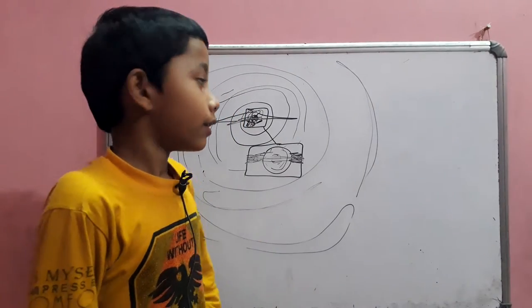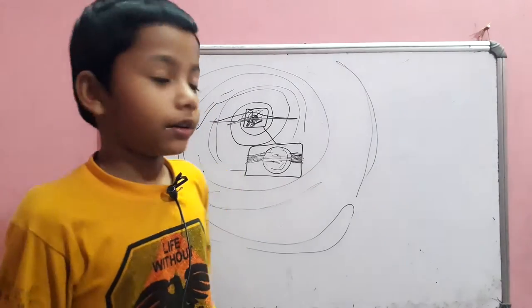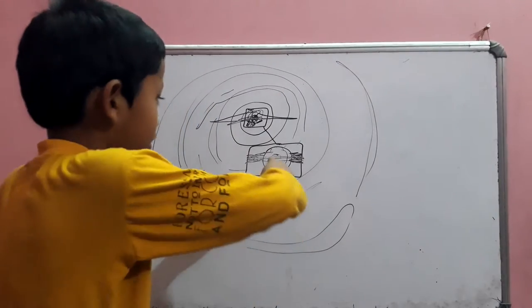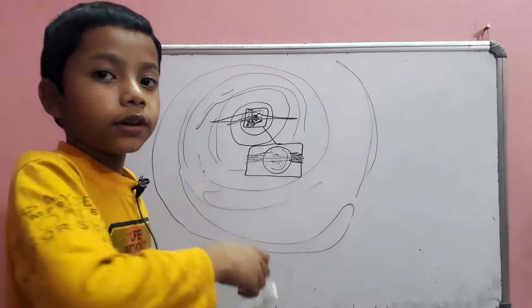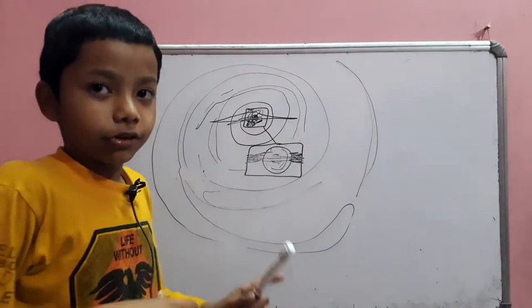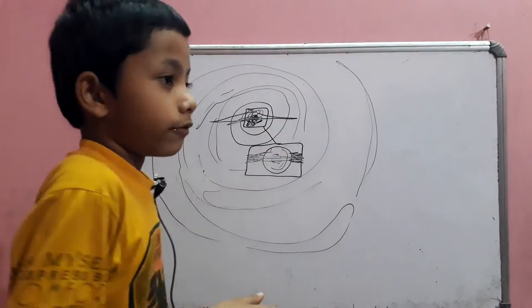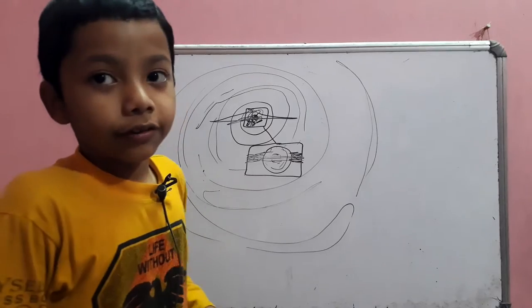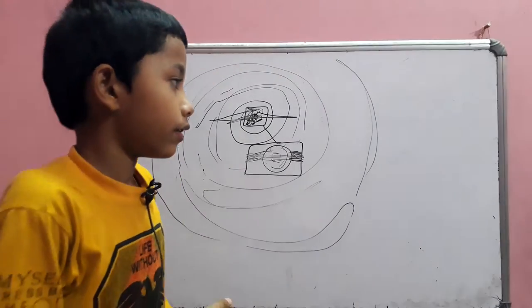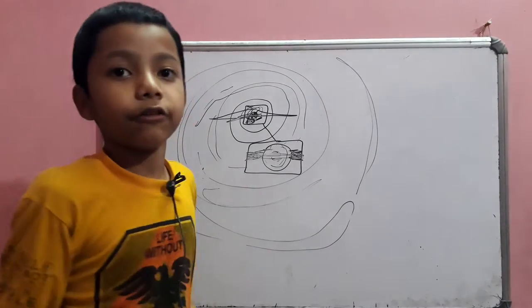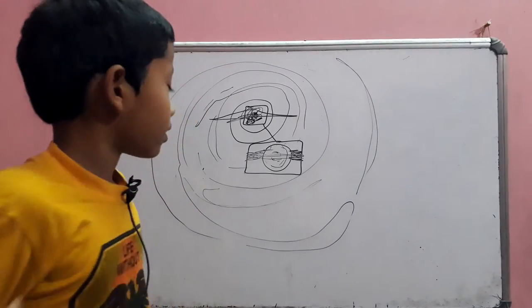Milky Way is the galaxy that we live in. So, this is a black hole. It is found in the galactic center, which is also known as the center of the galaxy, the Milky Way, the center of the Milky Way.